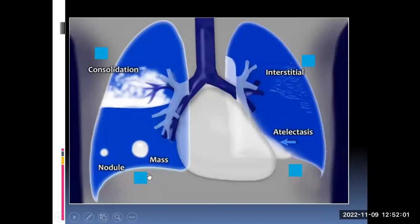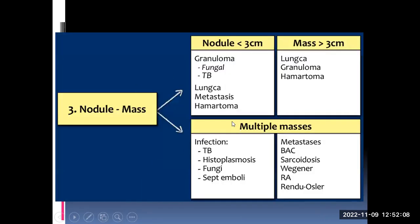Talking about masses and nodules: nodules are smaller. We call a lesion smaller than 3 cm a nodule and a lesion larger than 3 cm a mass. There are different differentials for a single mass, single nodule, multiple masses, and multiple nodules — but I will not go into detail as this would be a separate major topic in itself.